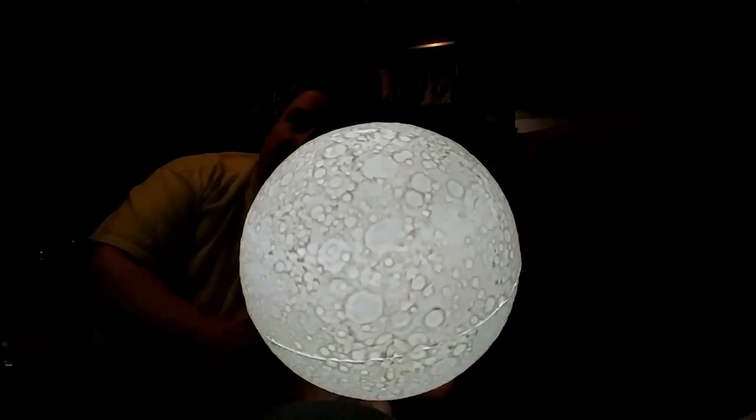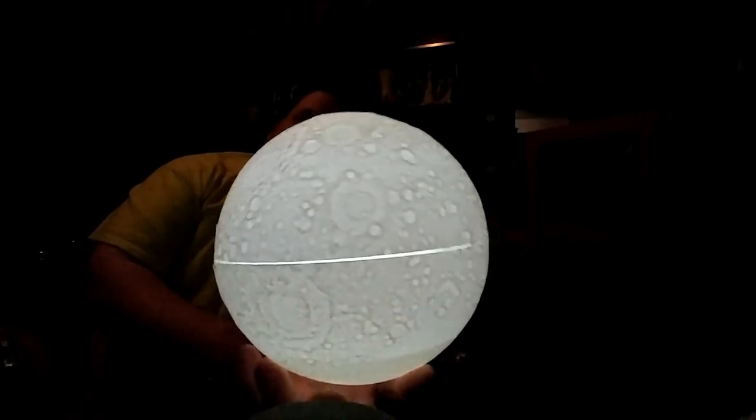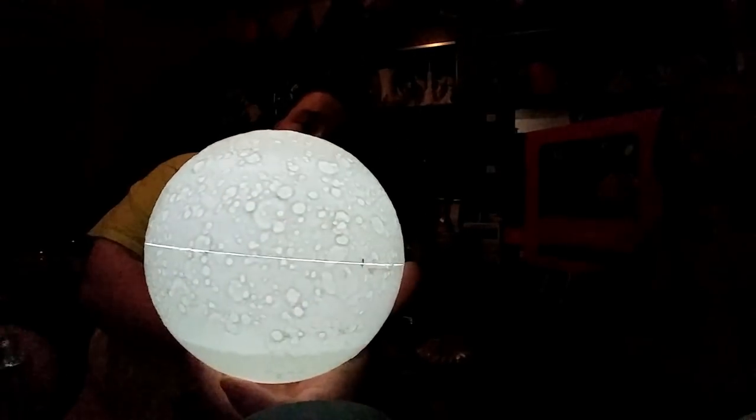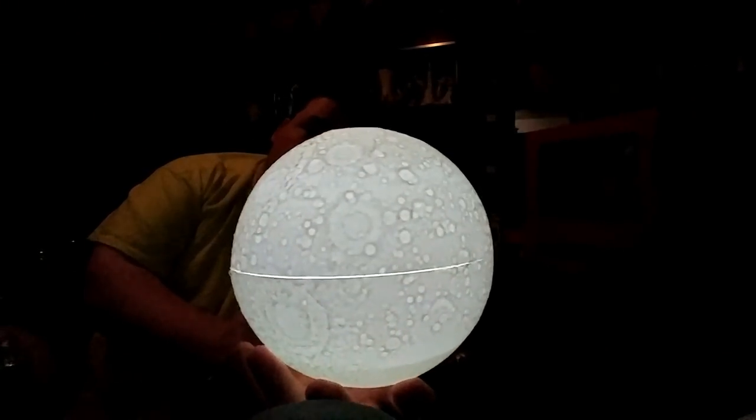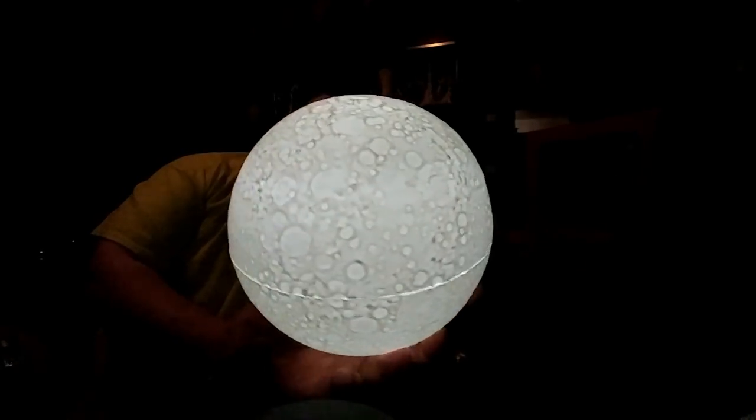I believe this is Atomic Filaments Hot White. I want to say Atomic's Hot White. But there is my moon. This is also printed on the Ender 2 and printed in two halves. And I just used hot glue to glue them together.